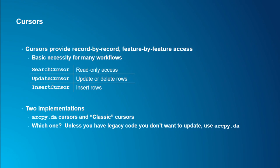First up is cursors. Cursors are a fundamental building block for a lot of workflows. I have a geoprocessing orientation — geoprocessing is like you have a big chunk of data, throw it at some tool, and you get something back. Cursors are more about getting into the individual rows and individual features, pulling out, changing, or adding new features and attributes.